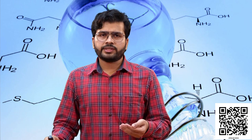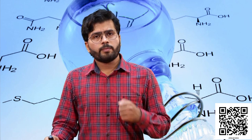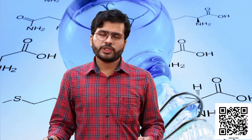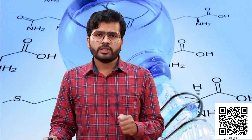We will take another example to understand the concept of mass number more clearly. The atomic number of sodium is 11 — that means number of protons is 11 — but the mass number of sodium is 23. That means 23 minus 11 gives the number of neutrons: 12. So we can conclude that the mass number of sodium is 23 and it contains 11 protons and 12 neutrons in the nucleus.